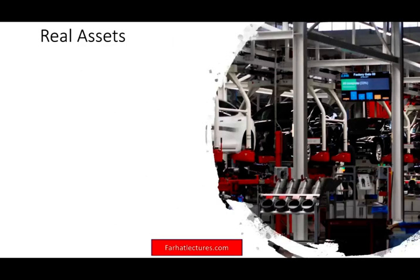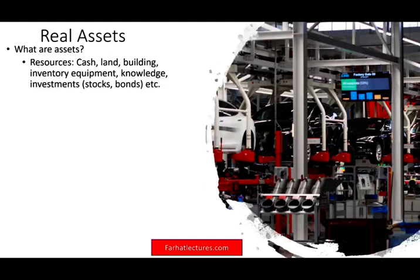Let's talk first about real assets. But before we differentiate between real and financial, what are assets? An asset is something you have to know in detail when you study accounting. Simply put, assets are resources. If you have a resource like money, you can do anything with it — it helps you achieve your goal. You can start a business, buy inventory, buy land, buy equipment to produce. Assets are resources such as cash, and cash is the best asset because you can do anything with it.